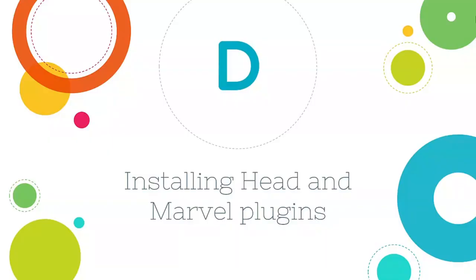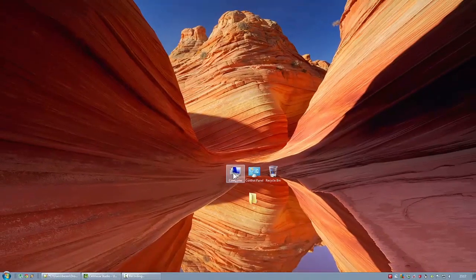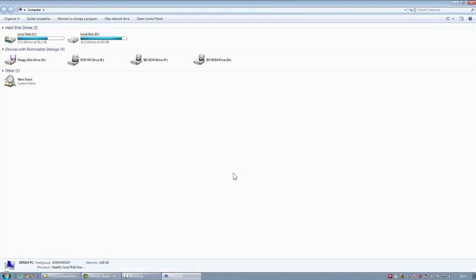In this lecture, I will explain how to install the HEAD and MARVEL plugins, which are quite useful. Marvel contains the Sense plugin that we will use in every single lecture of this course. If you are using Elasticsearch version 2, skip the Marvel plugin and install only the HEAD plugin. In another lecture, we will install Kibana, which contains the Sense plugin we will need. HEAD and Marvel plugins are both very useful.